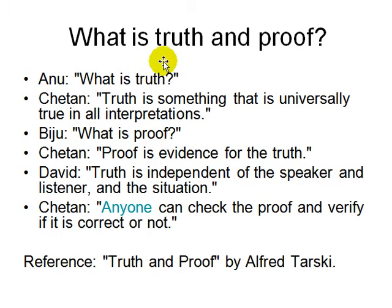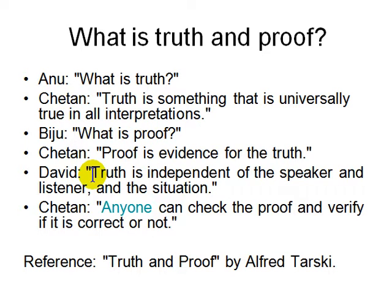Let's look at a dialogue. What is truth? Truth is something that is universally true in all interpretations — it doesn't matter where you apply it, it should apply in the same way. What is proof? Proof is evidence for the truth. David says truth is independent of the speaker, the listener, and the situation — it doesn't depend on who says it or when. Anyone can check the proof and verify whether it's correct or not. You can't say 'you have to trust me on it.'